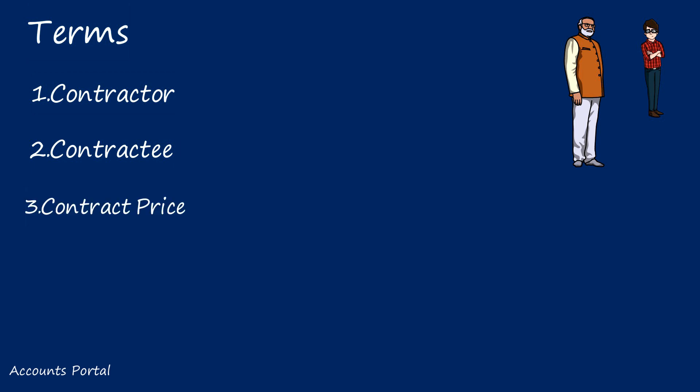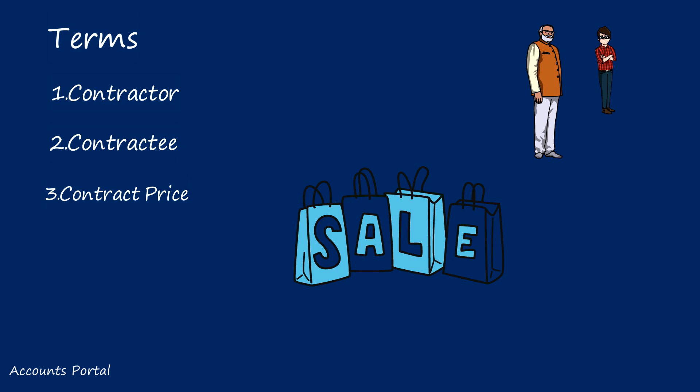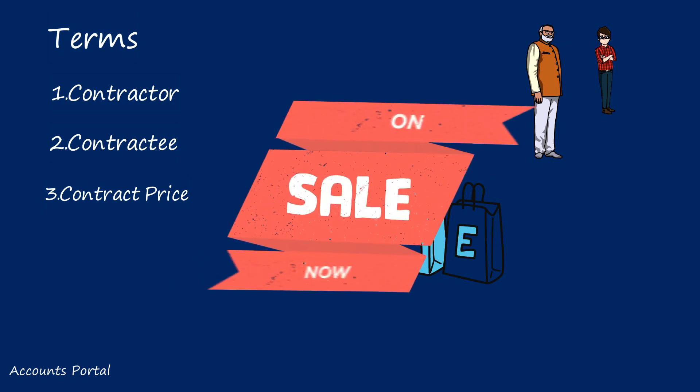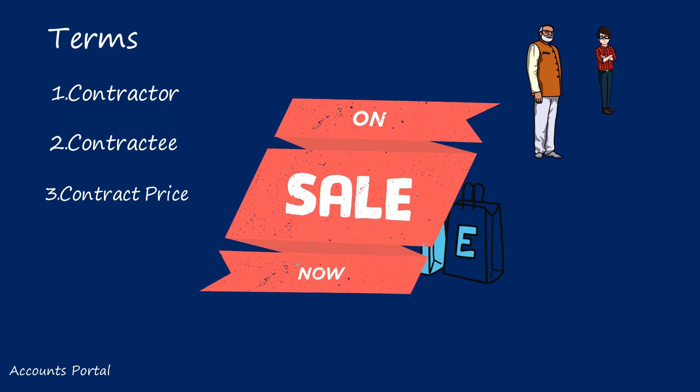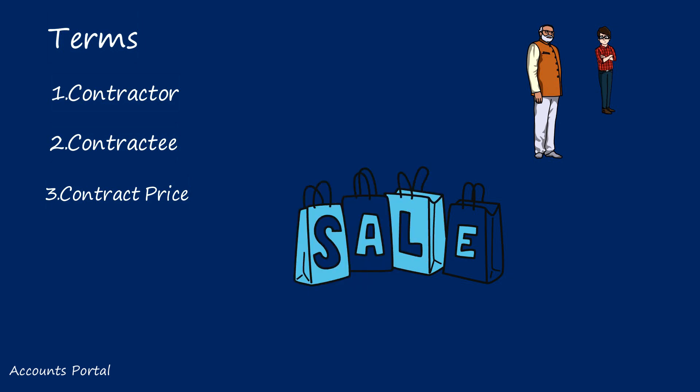Contract price is the selling price — it is similar to sale price, but in case of a contract we don't call it sales. Just like fees paid to an academy are revenue for the academy, contract price is also revenue for the contractor. The contractee should pay the contract price to the contractor. As and when the contract is partially completed, we recognize the proportionate sales.